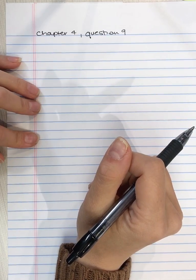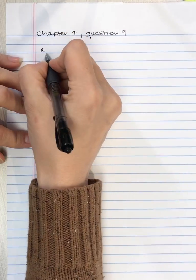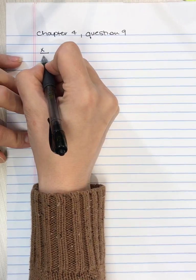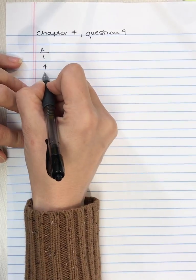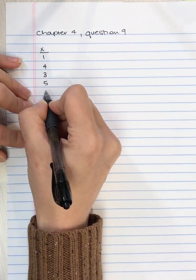Chapter 4 states, for the following set of scores, x is equal to 1, 4, 3, 5, 7.